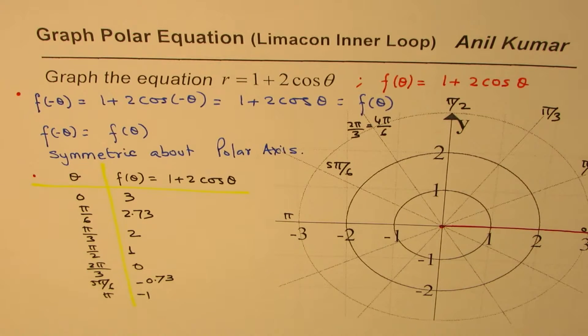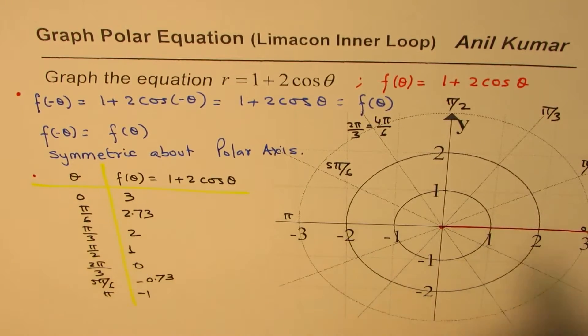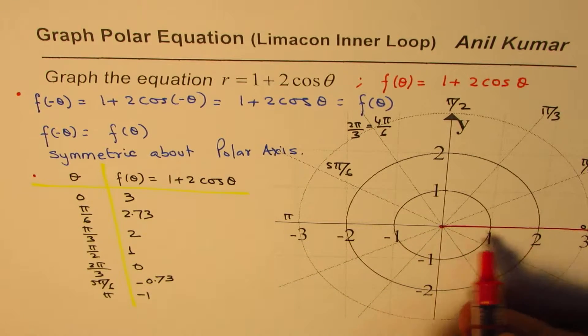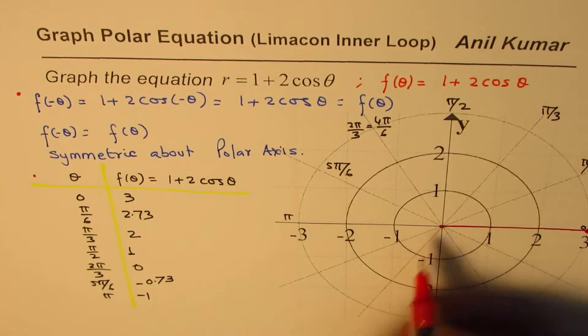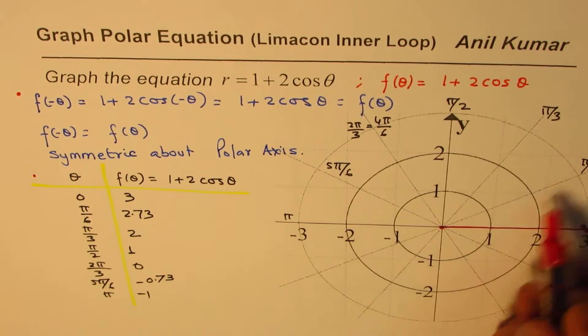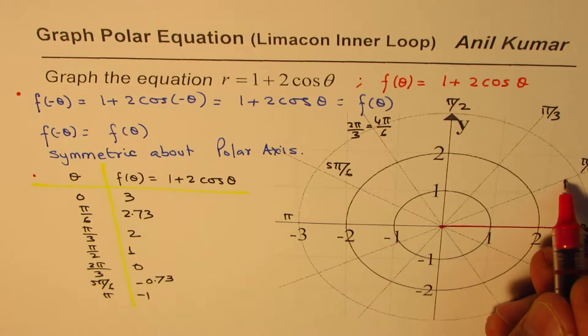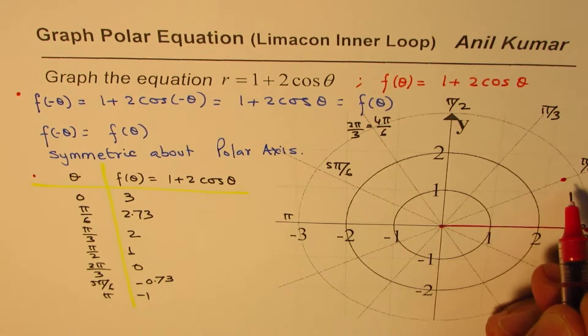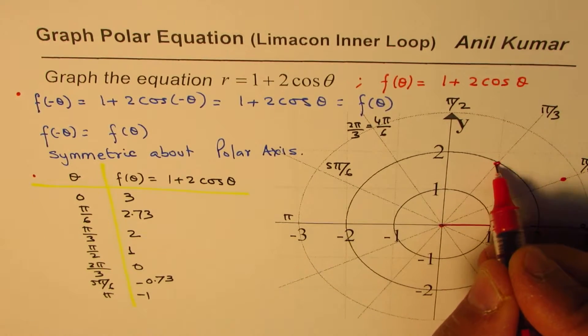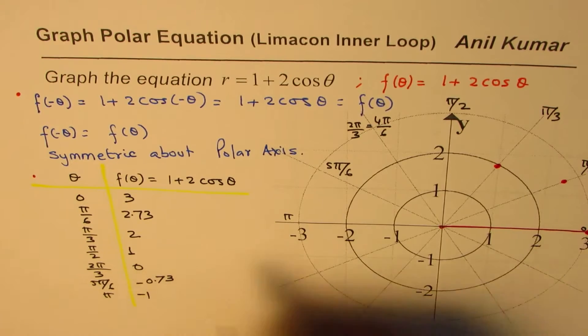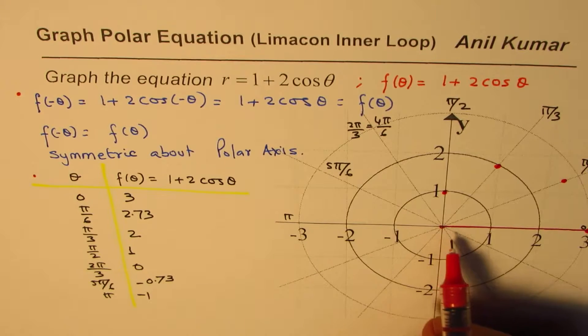Now let's go through the graph and plot each point. So the first point, 0 and 3, that means the angle is 0. You go along the polar axis and mark the point 3 units away from the pole. Pi by 6, so that means this is the ray we are talking about. 2.73 is kind of close to here. So that is the next point. Pi by 3, 2 units away. Pi by 2, 1 unit away.